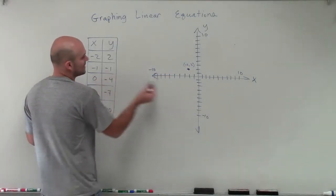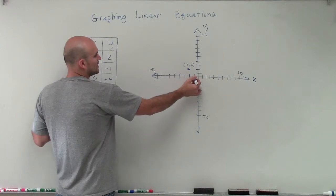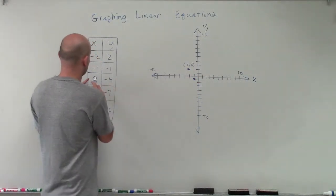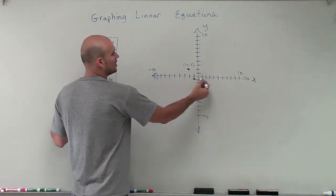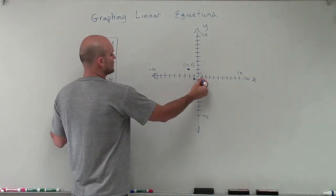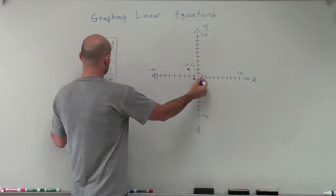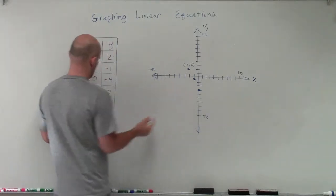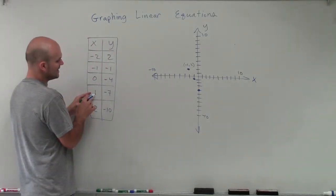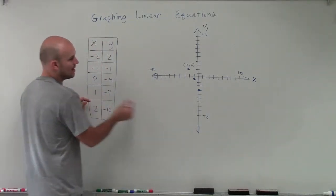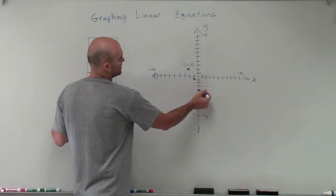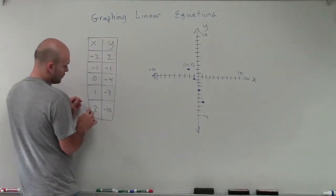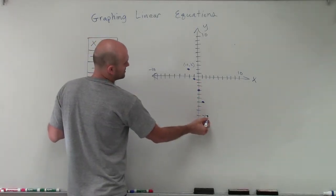Then I have negative 1, negative 1. So I'm going to go left on the x-axis 1 unit, and then down on the y-axis 1 unit. Then I have 0, negative 4 — so I'm not going to go left or right at all on the x-axis, but I'm going to go down 4 units on the y-axis. Then over 1 unit on the x-axis, down 7 units on the y-axis. And then over 2, down to negative 10.